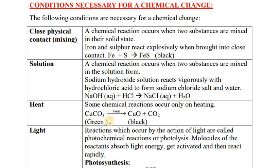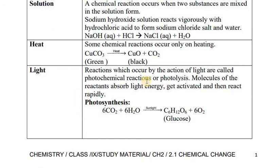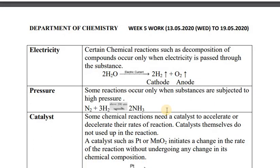Some reactions require heat — for example, the decomposition of copper carbonate to copper oxide. Remember: copper carbonate is green in color, copper oxide is black in color, and carbon dioxide is the colorless gas produced. Some reactions take place in the presence of light; decomposition caused by light is known as photolysis. Photosynthesis uses sunlight to convert carbon dioxide and water into glucose and oxygen — this is the basis of life. Passing electricity through water causes decomposition: water decomposes into hydrogen (at cathode) and oxygen, which is electrolysis.